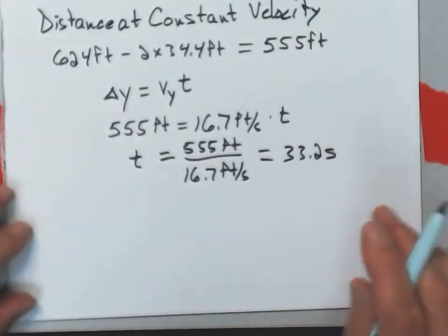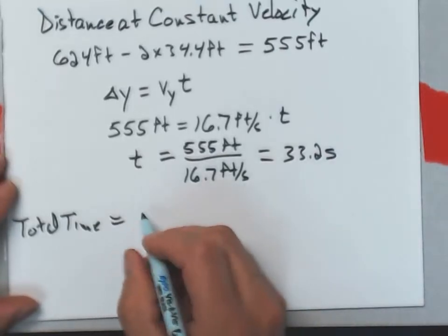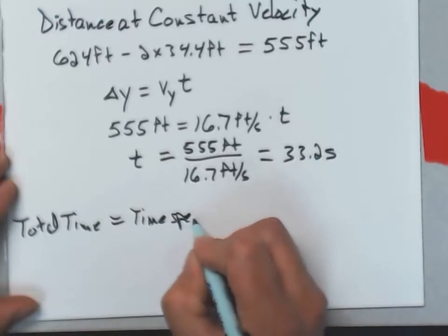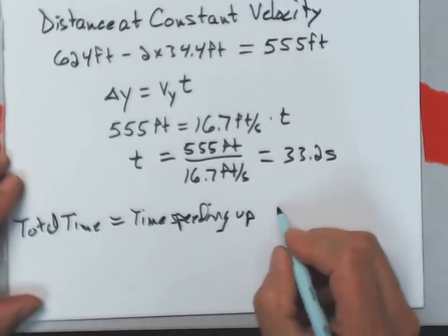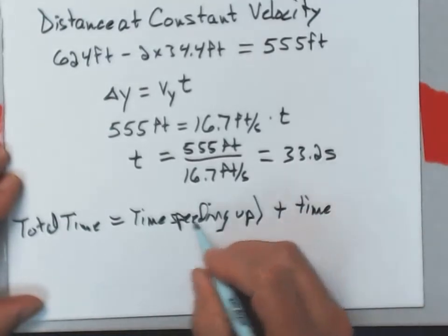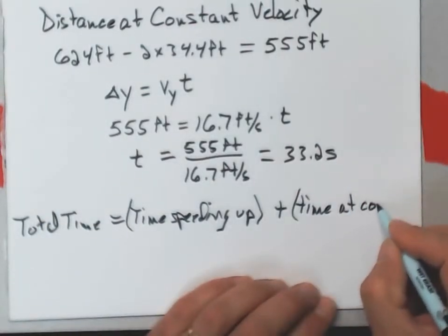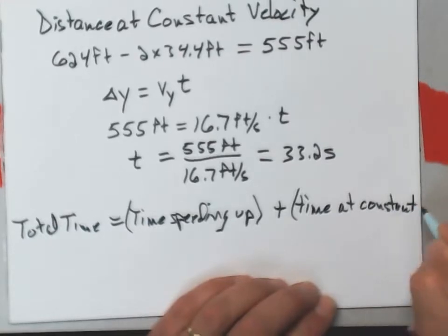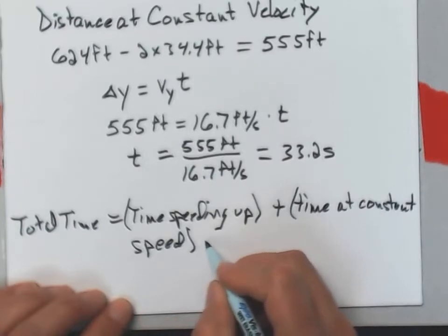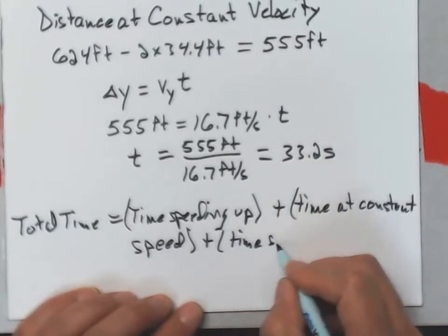So here's what my total time will be. It will equal the time speeding up at the beginning plus the time, maybe I'll wrap these in parentheses here, time at constant speed, plus the time slowing down.